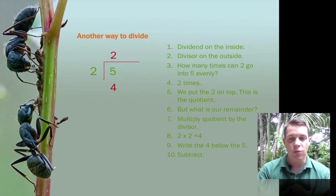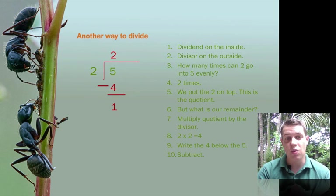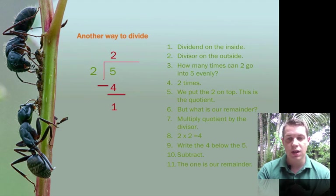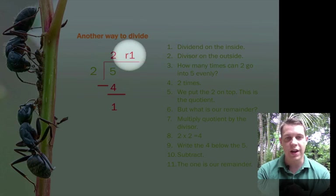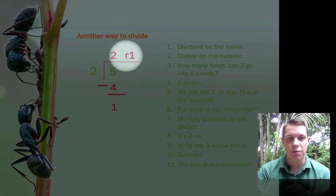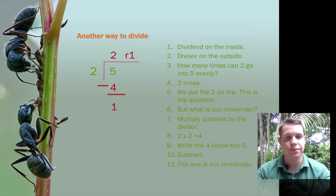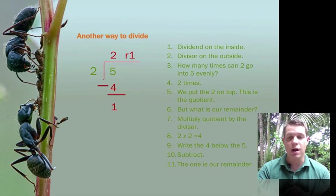We write that product below the 5. Then, we subtract. 5 minus 4 is 1. And the 1 is our remainder. And so we keep our answer all together. We're going to write R1 next to the quotient. So this is our final answer. 2 remainder 1. Which is what we saw in the previous problem.